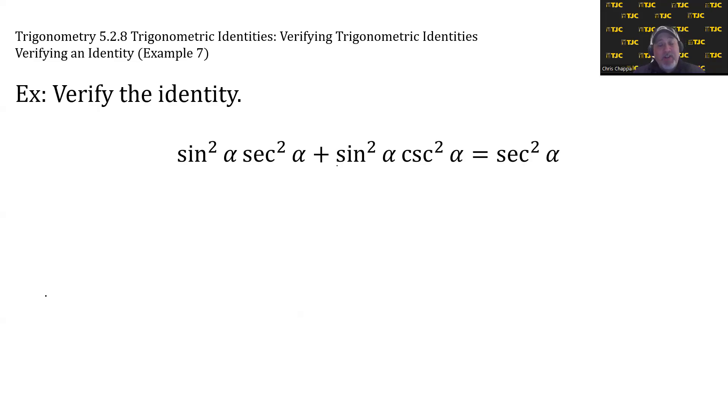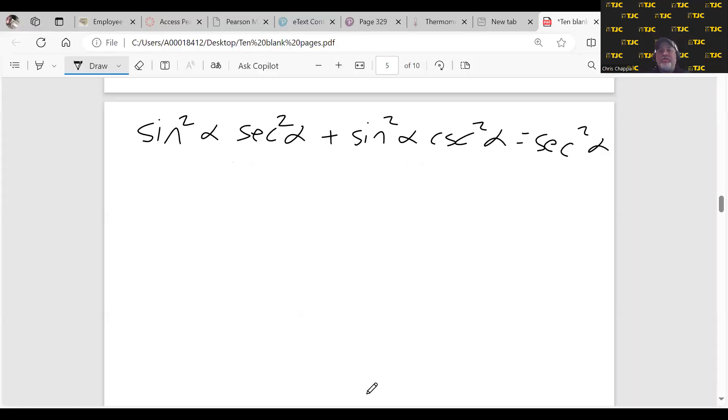Needless to say, we're going to start with the left side and hopefully collapse it down to the right side. I have continued setting these up in a PDF where I can write everything out a little bit better and keep it a little bit more organized. So here's the identity that we're trying to verify. Let's start with the left side and see if we can find some sort of move that we can do.